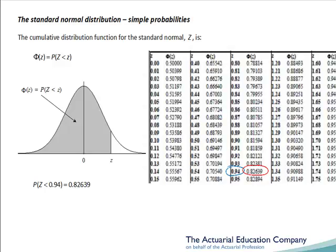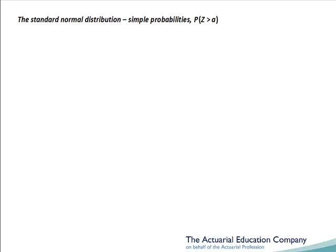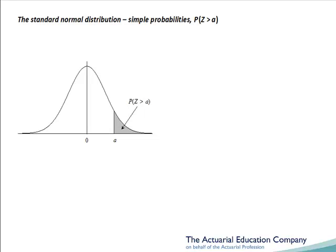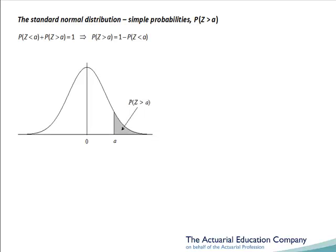Notice how these tables only give less than probabilities. So how do we deal with greater than probabilities? We want to find the probability that z, the standard normal random variable, is more than a positive number, say A. Recall from an earlier unit that the whole area under the graph, i.e. the total probability, is 1. This gives us the relationship: the probability that z is less than A plus the probability that z is more than A equals 1. Rearranging, the probability that z is more than A is simply 1 minus the probability that z is less than A. So all we have to do is look up the less than probability given in the tables and then subtract it from 1.